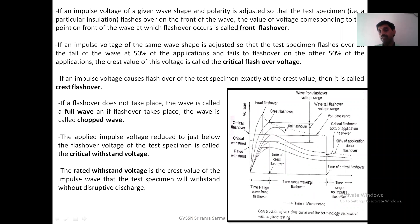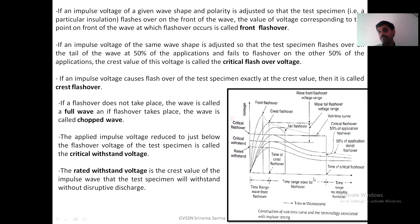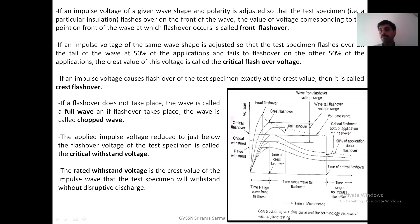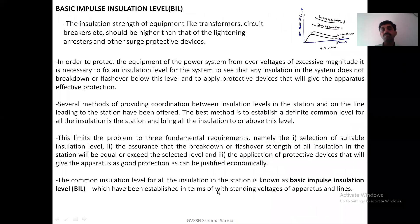From the volt-time curve, there are distinct time ranges: if the application time is in the front range, flashover occurs on the front wave itself; in the next range, flashover may occur on the tail side; in the further range, there is no flashover at all. That means the time of application is important as well as the magnitude of the voltage — both are important to test the insulation withstand level.